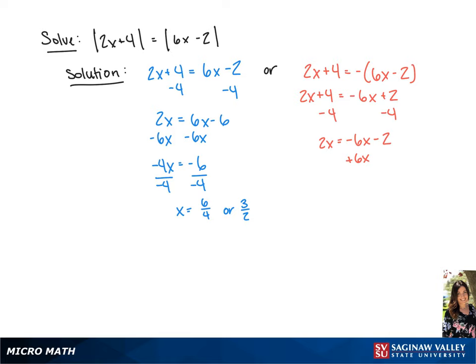Now we're going to add 6x to each side, which will give us 8x equals negative 2. Last, we're going to divide each side by 8, giving us another solution of x equals negative 2 over 8, or we can simplify this to negative 1 fourth.